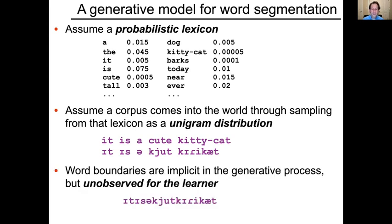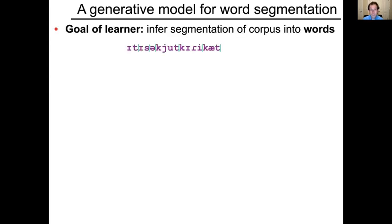The word boundaries are implicit in the generative process, but they're unobserved for the learner, so you get a continuous input sequence. This sets up the learning problem — the inferential problem for the learner. The learner has to infer the segmentation of the corpus into words.